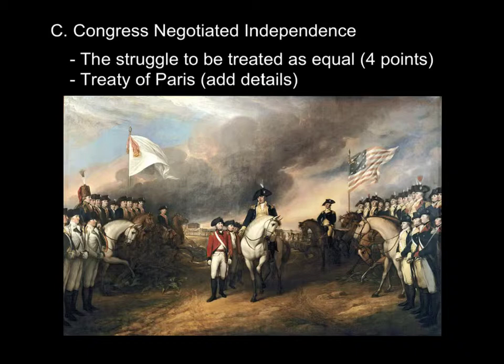This whole set of negotiations became known as the Treaty of Paris — basically a series of separate treaties among the United States, Great Britain, France, and Spain that were all signed at Versailles on September 3, 1783.